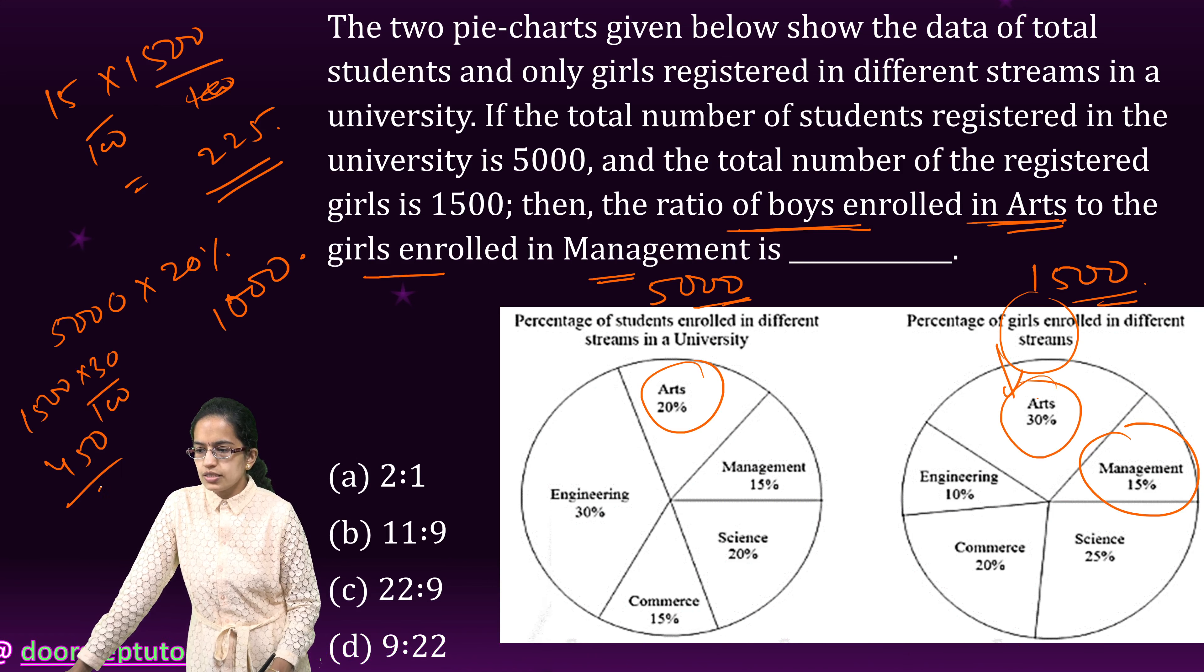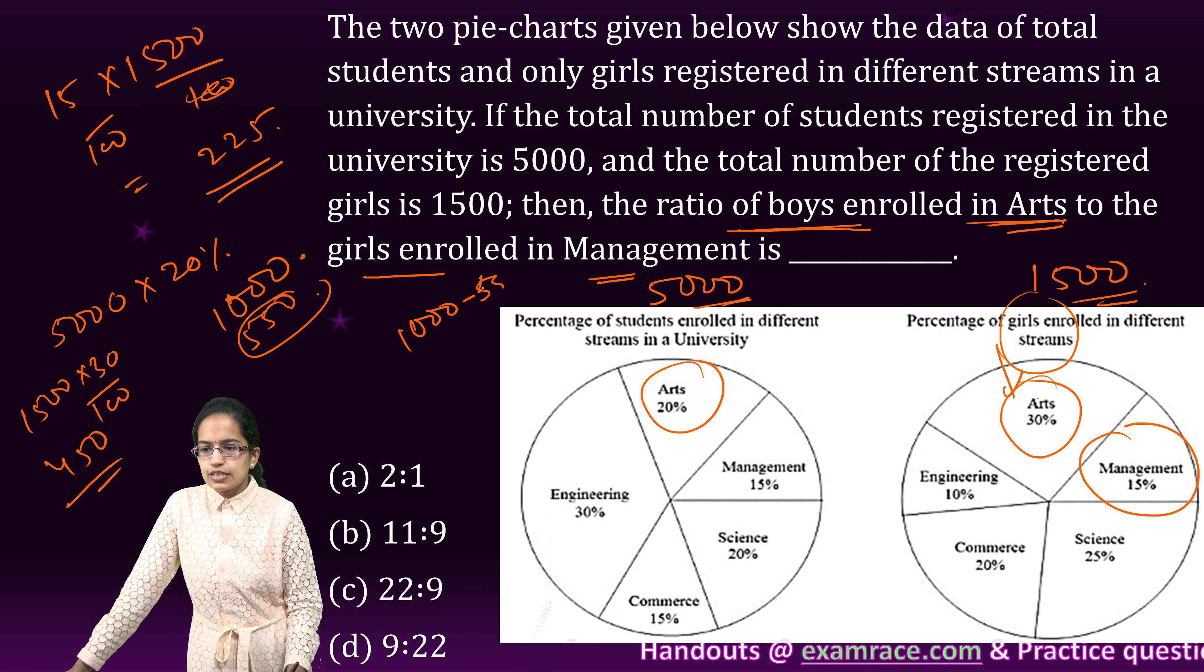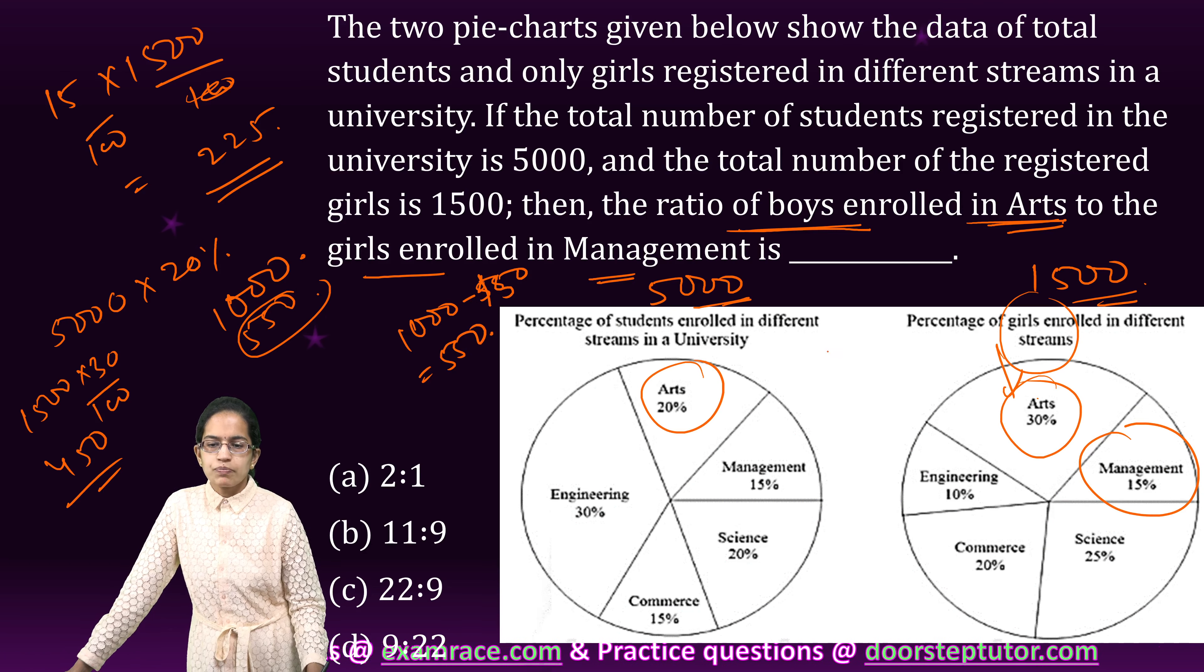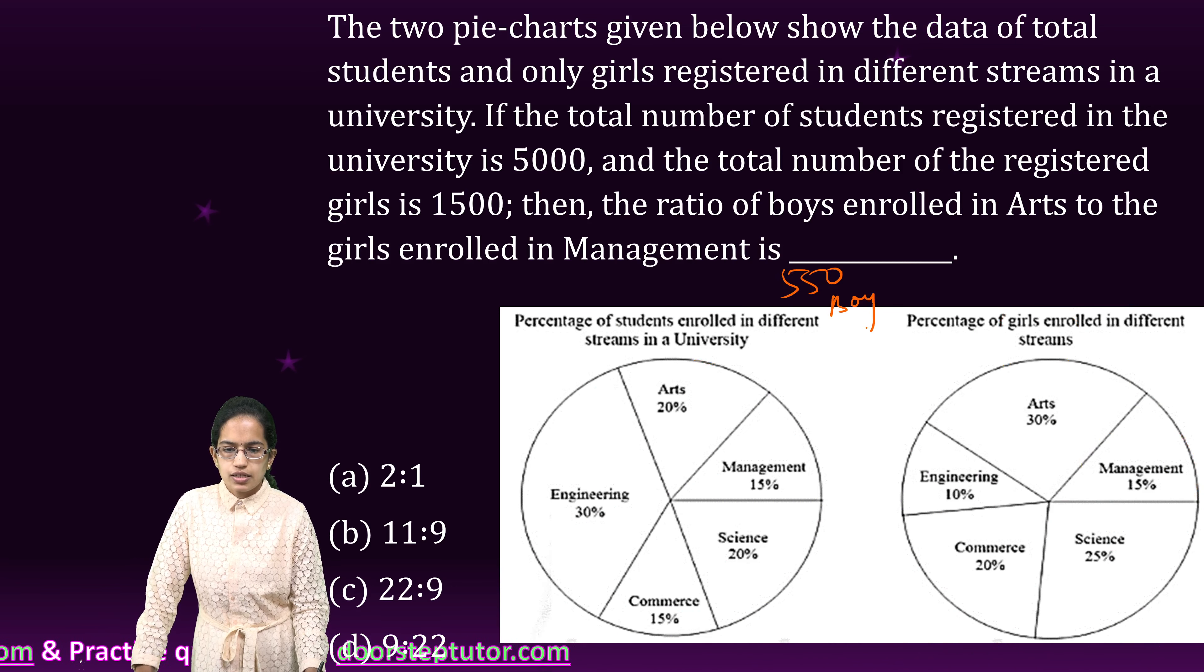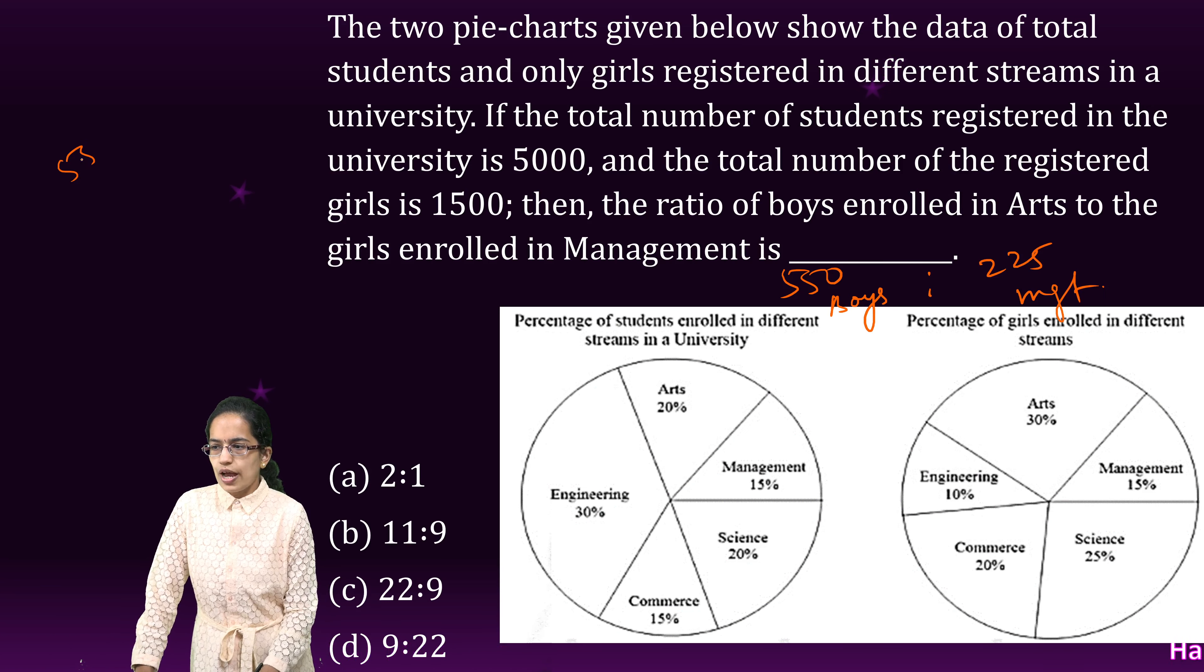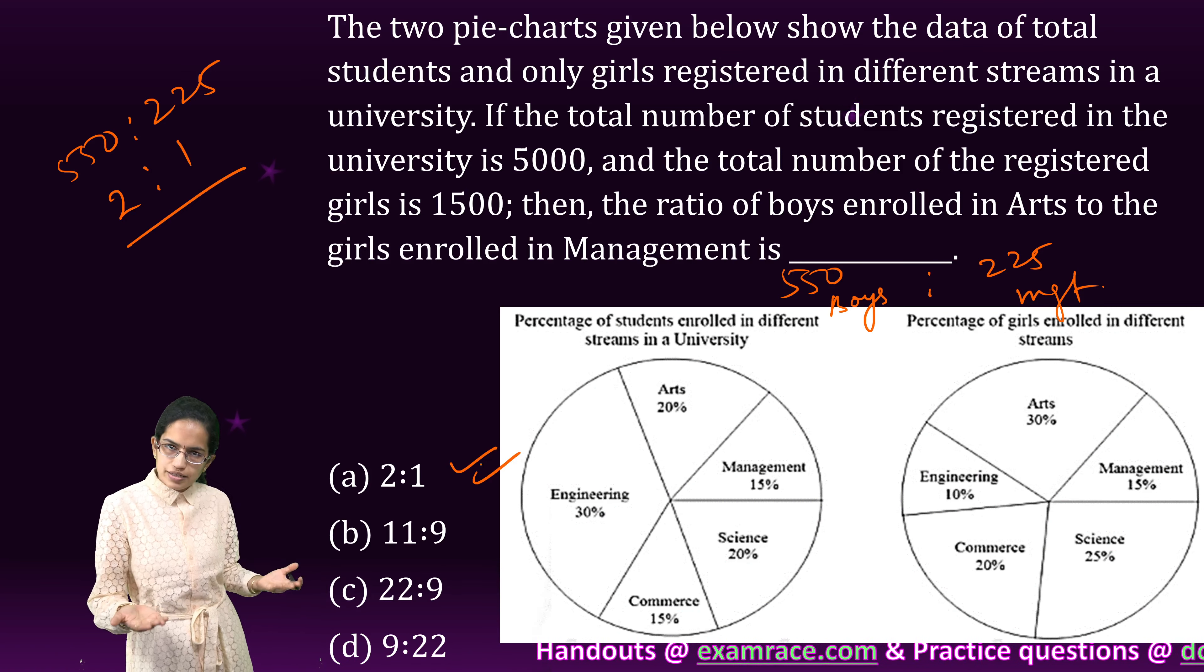So how many boys? 550 boys. 1,000 is the total number of students in arts minus 450 which are the girls. So how many boys? 550 are the boys. Now if I remove this, I have 550 boys in arts versus 225 girls in management. So the ratio would be 550 is to 225, that is 2 is to 1. So 2 is to 1 would be the right option. Very simple question.